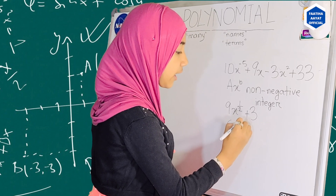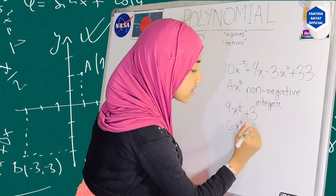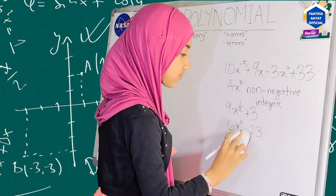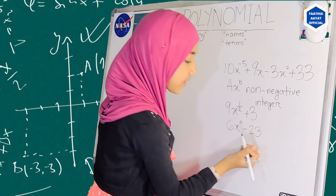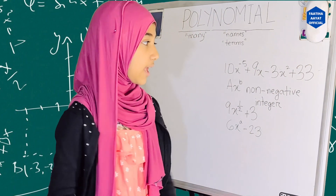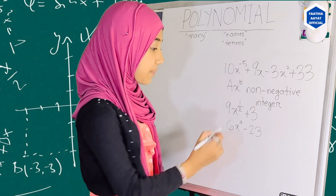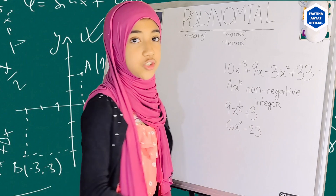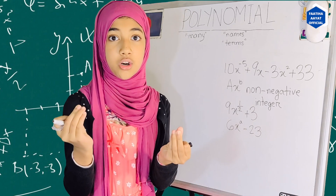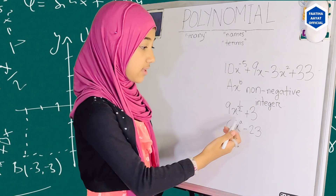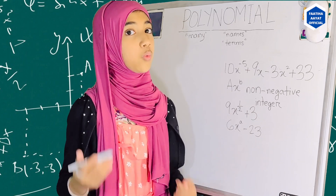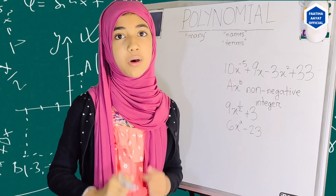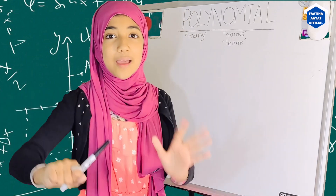Another example of what is not a polynomial is 6x to the power a minus 23. This is also not a polynomial because the power here is a variable. It actually has to be an integer — basically a real number. Since this is a variable, that's why we cannot consider these three as polynomials.